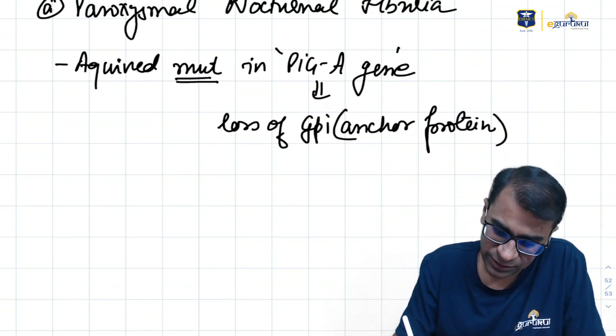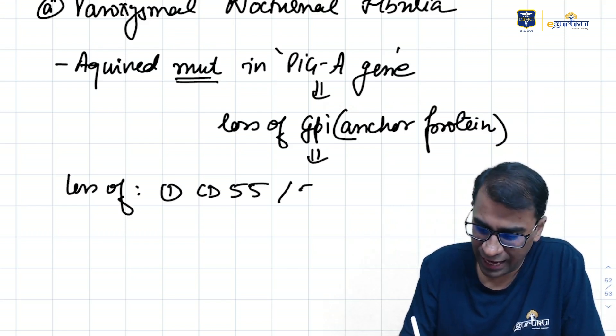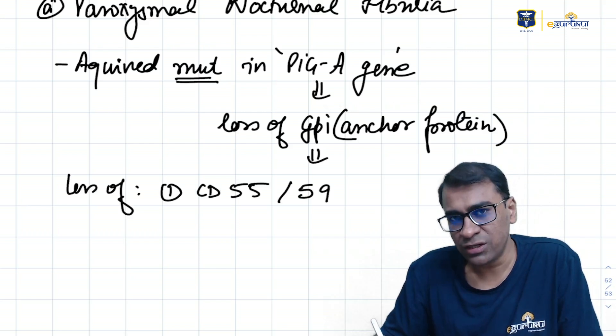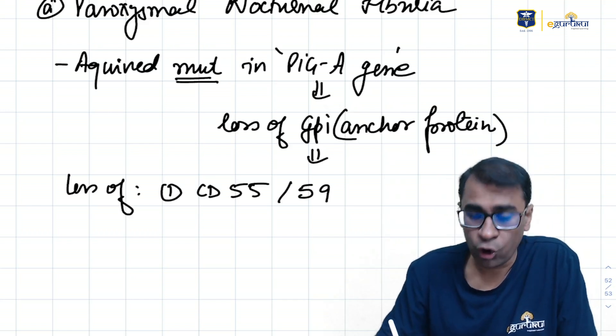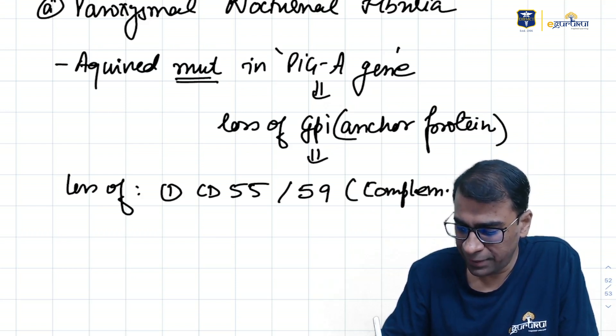What happens because of this loss is the loss of some proteins, example CD55 and 59. Actually, these both CD markers are complement regulators. So there is loss of complement regulators.